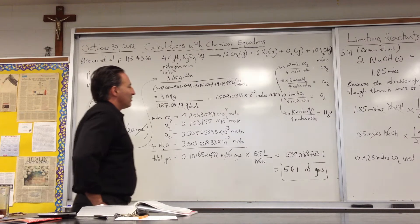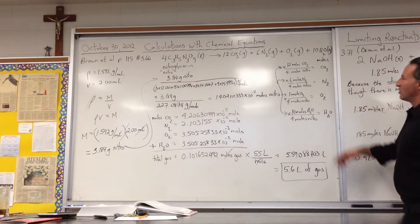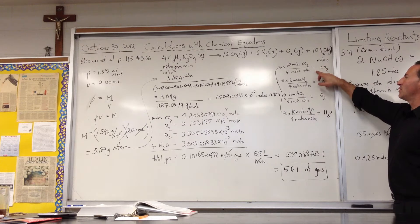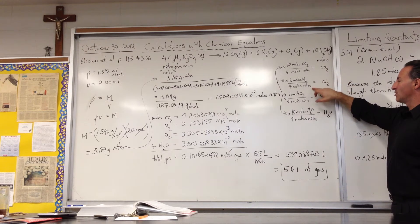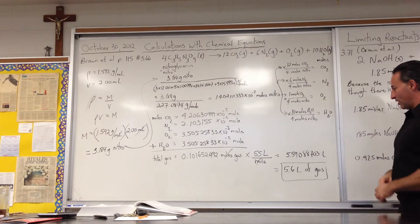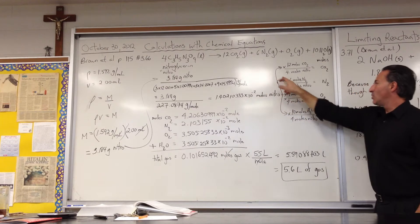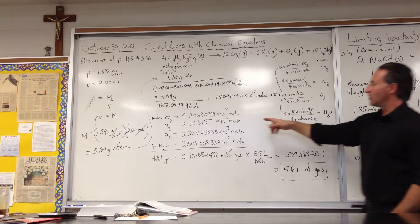And then the stoichiometry is used to find out how many moles of each type of gas is produced. So it's the 12 to 4 stoichiometry for carbon dioxide, 6 to 4 stoichiometry for nitrogen, 1 to 4 for oxygen, and 10 to 4 for water. So I multiplied this number by each one of these ratios to get all these mole quantities.